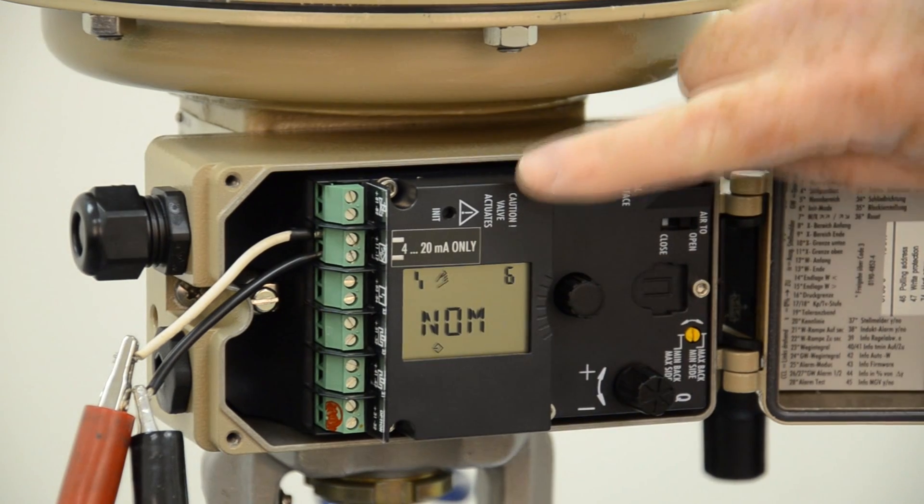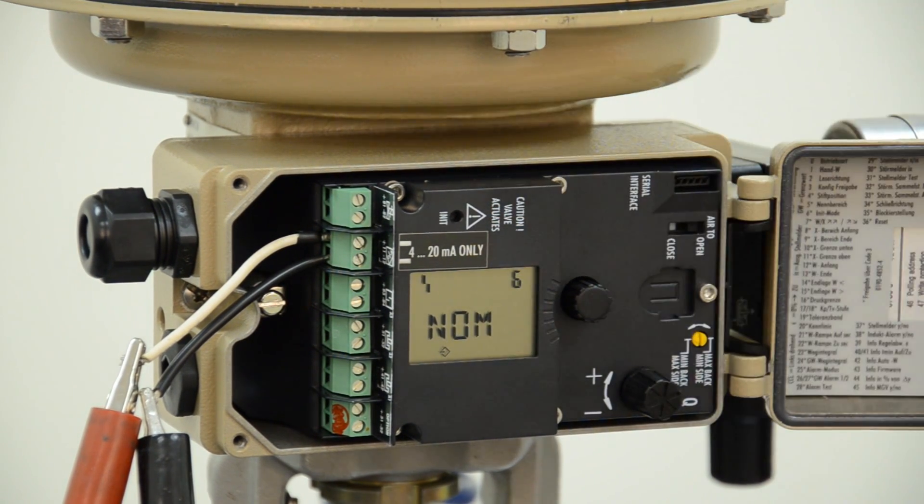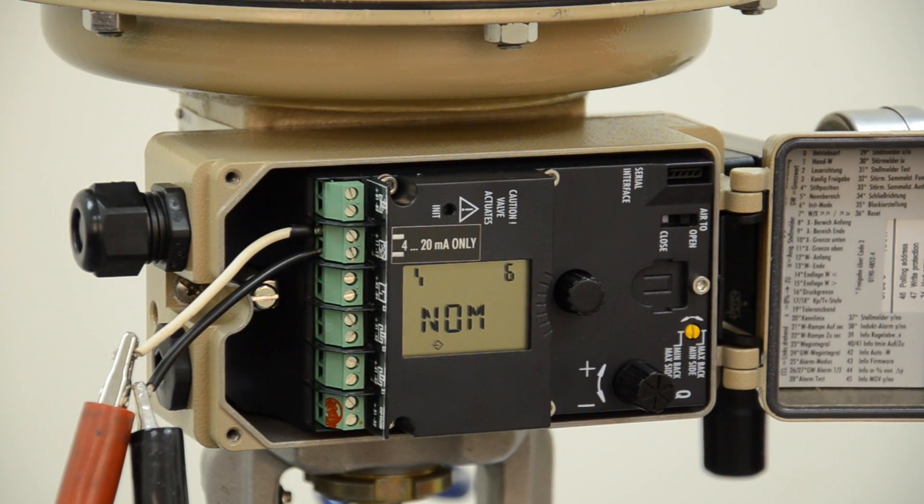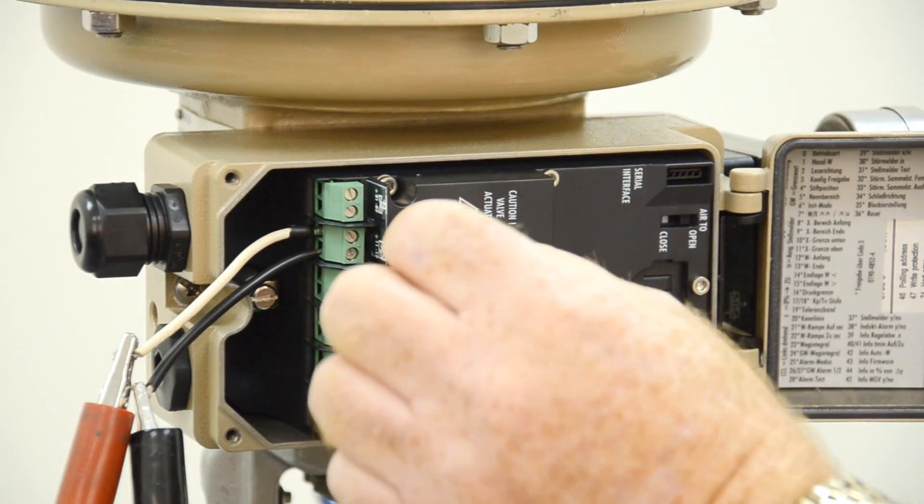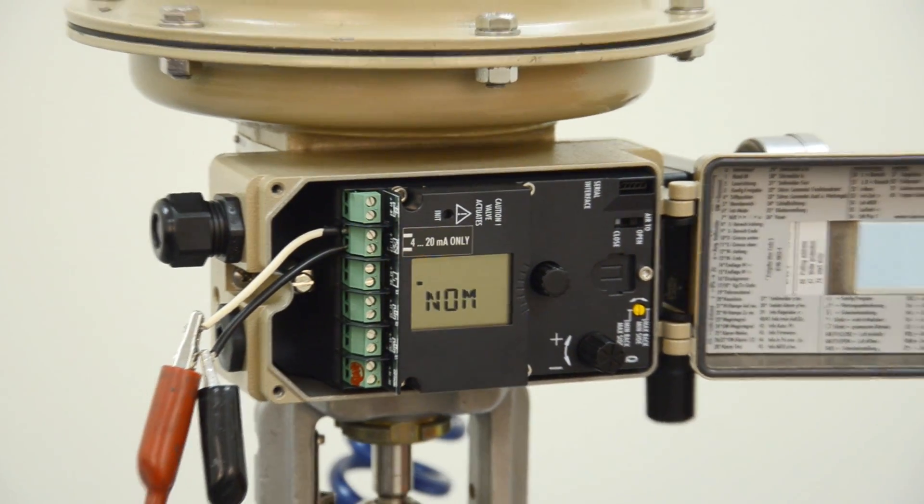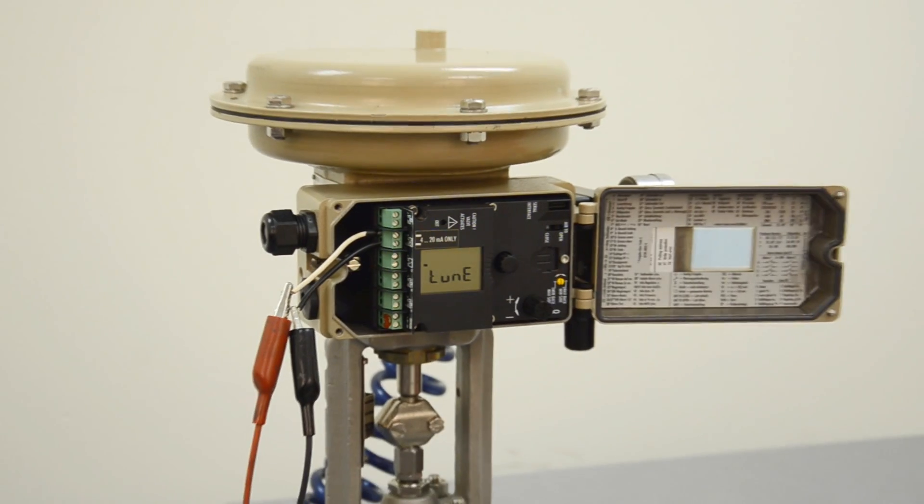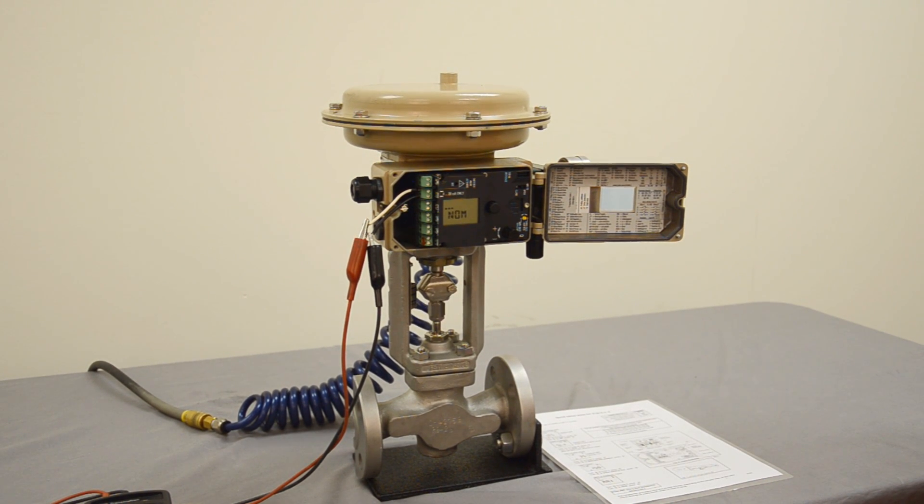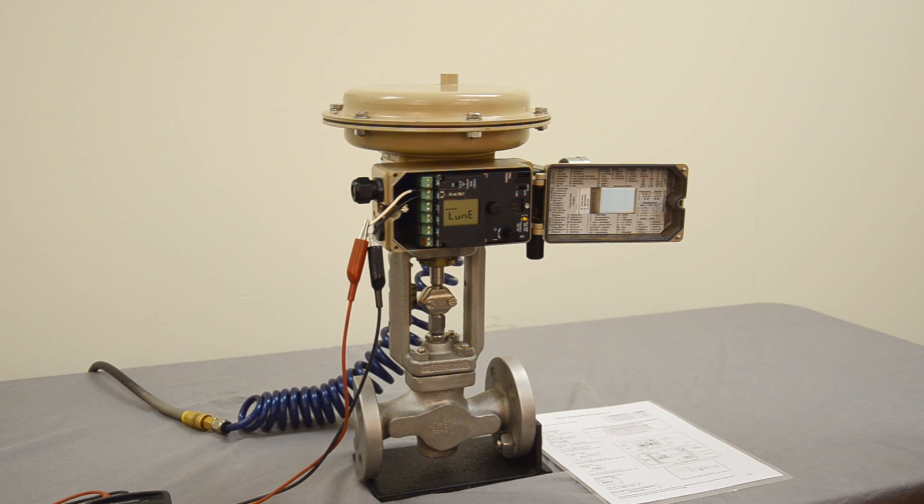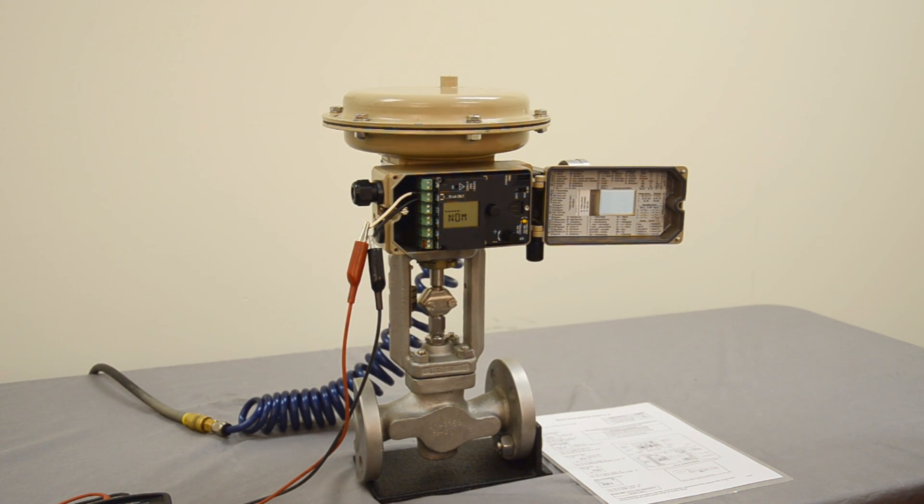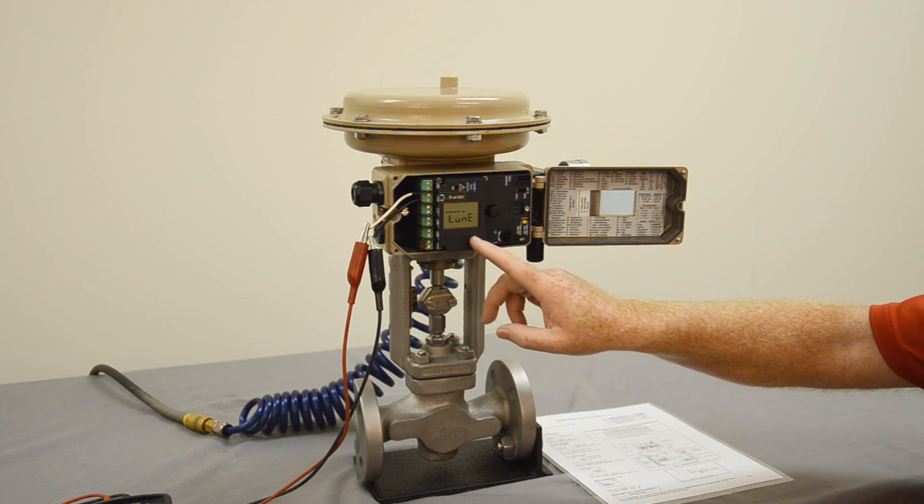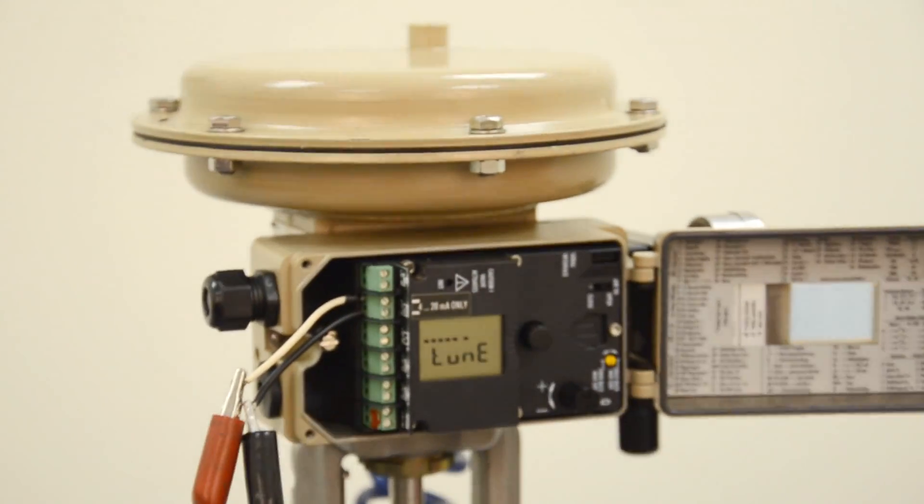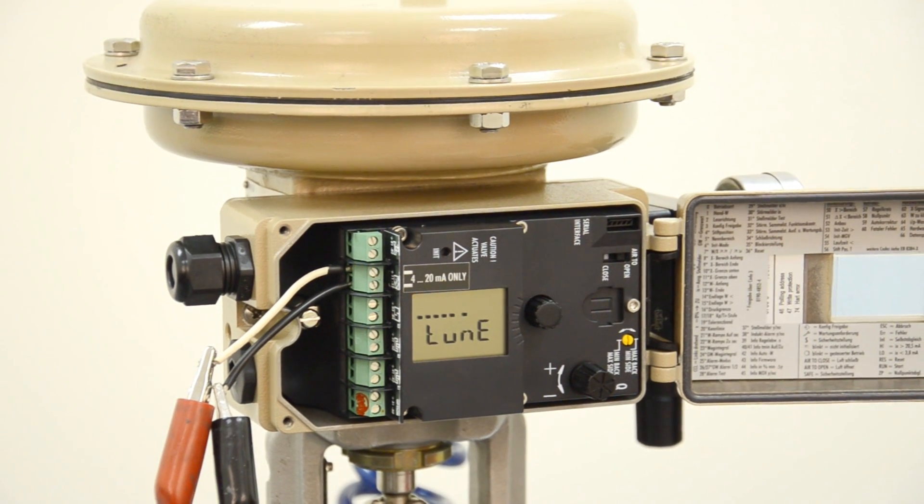There is a button right here, which is our initialization button. You need a small pin or something that can fit into a real small hole, paper clip or something. And you would come in here and press. And the positioner will go through a complete range of the valve, 4 milliamps, 20 milliamps, and different pressure ranges to calibrate. As it's calibrating, there's a bar located on the display that shows you your progress. And this will take a couple minutes to go through the whole process.